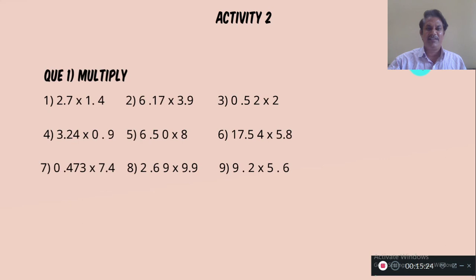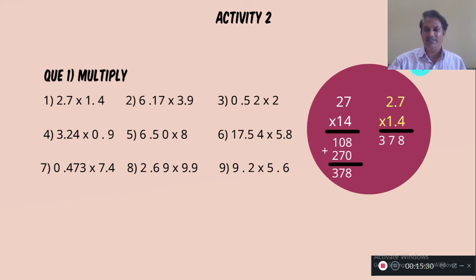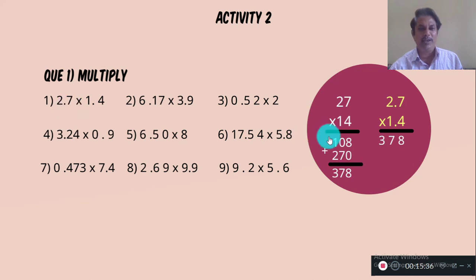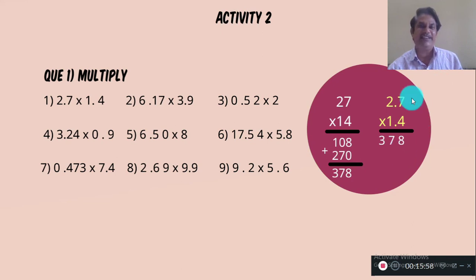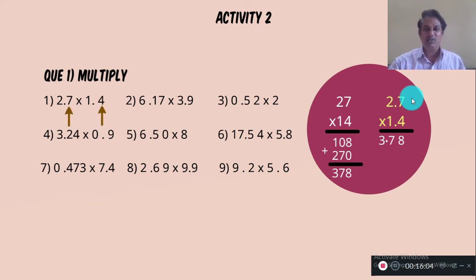Now there is an activity for you. Here there are nine examples — solve all nine. One example has already been solved. The product is 378. In the multiplicand there is one decimal place and in the multiplier there is one decimal place — so there are two decimal places. Place the point in the product so there are two decimal places. The answer is 3.78.